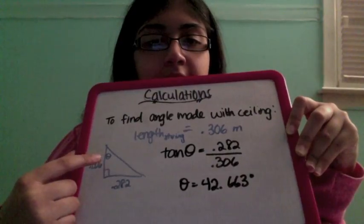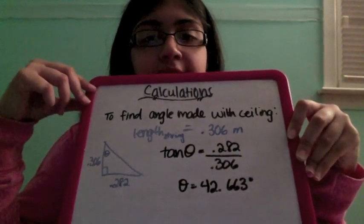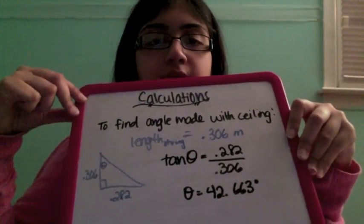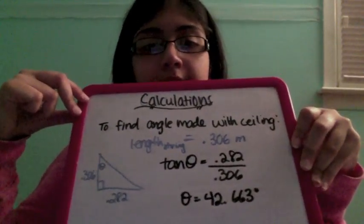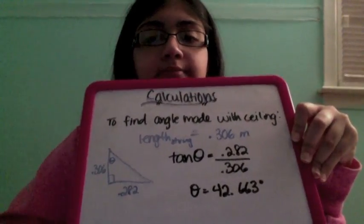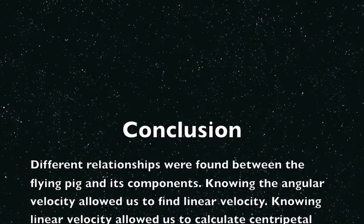We're solving for theta. Tangent of theta equals 0.282 divided by 0.306, and we found that theta equals 42.663 degrees.